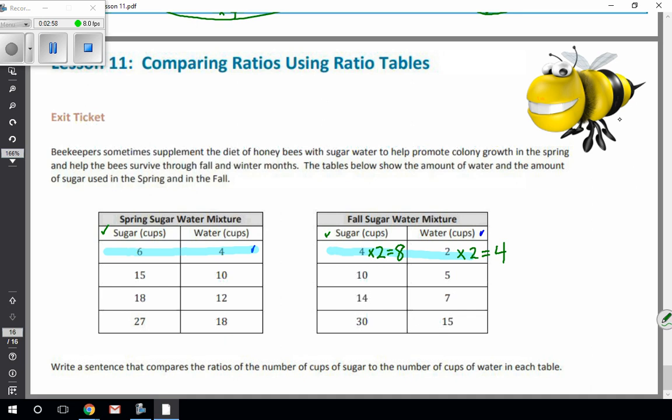In the spring, they would use 6 cups of sugar per 4 cups of water. And in the fall, they use 8 cups of sugar per 4 cups of water. So you can compare it that way.